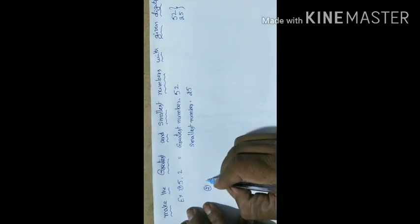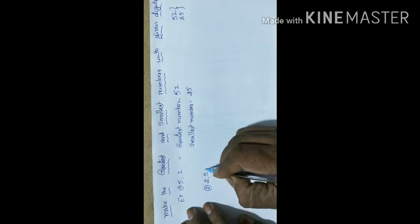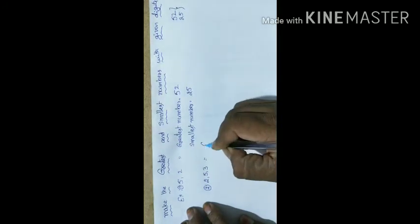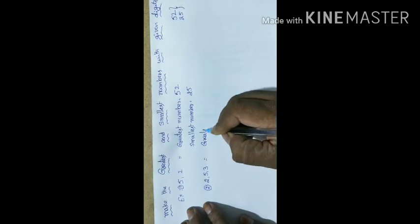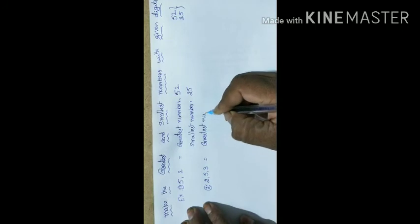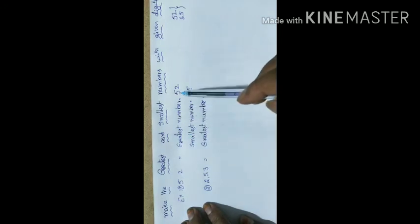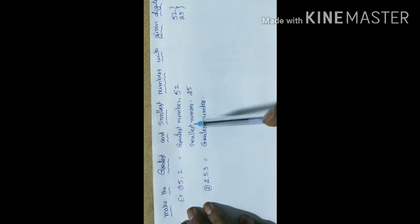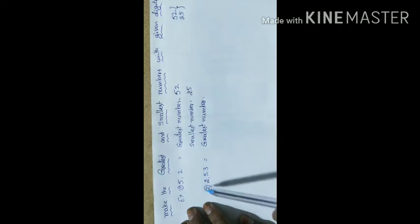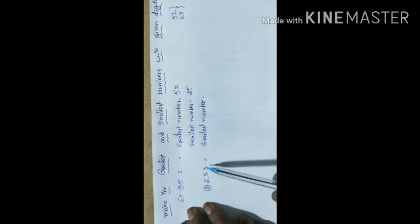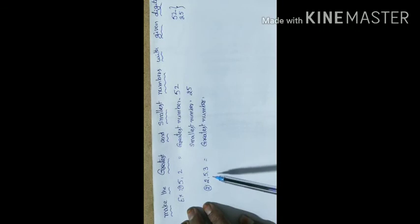Now the second example: digits 2, 5, and 3 are given. Which is the greatest number? Descending order gives the greatest number. With these three numbers, how many numbers are possible to make? Six numbers — we learned this in yesterday's class. So with 2, 5, and 3, we can write six numbers. In those six numbers, which is the greatest?